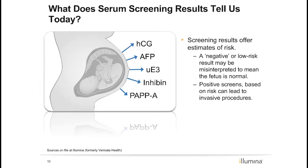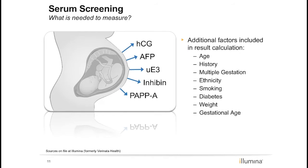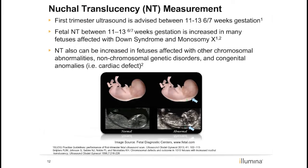Ultimately, the only way to confirm the presence or absence of a condition is by having a diagnostic procedure. In general, the false positive rate is set at 5% for serum screening. Factors taken into account during risk calculation include biochemical markers measurable in the first or second trimester, as well as patient-related factors such as ethnicity, maternal weight, and gestational age. Measurements may vary between laboratories, and a risk score can change significantly even with a small difference in any of these factors.